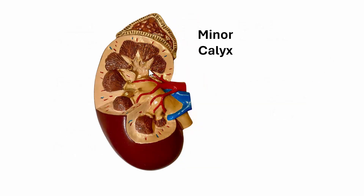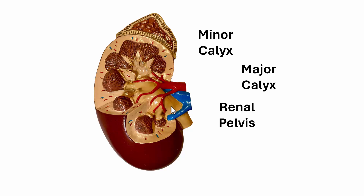The pyramids drain urine into openings. The first is the minor calyx, which drains into the major calyx. From the major calyx, it drains into the renal pelvis, and then finally into the ureter.